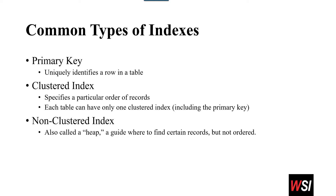Each table can only have one clustered index, because you can't sort on multiple criteria — it's going to define order. If I sort words by both the first letter and the last letter, it doesn't really make a whole lot of sense. Now, the non-clustered index — we can put as many of those as we want. That's also a guide on where to find certain records. The difference is that it's not ordered in any way, but it's still a guide that gives direction on where to find particular records.